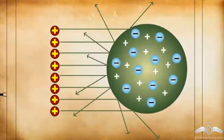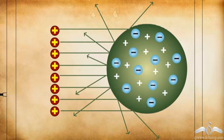He expected something like this to happen. If Thomson's model was correct, then the atom is a positive solid sphere. So all the alpha particles should have been deflected when they strike the atom — all the particles should have been deflected.